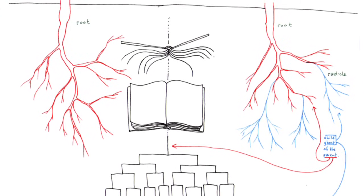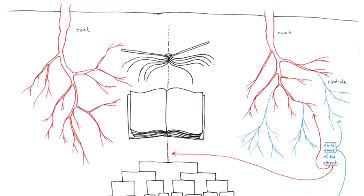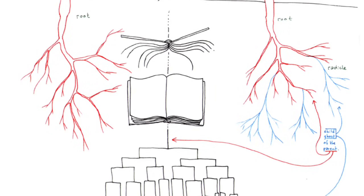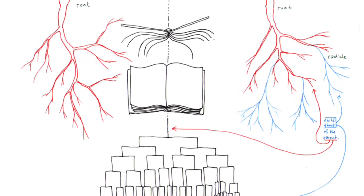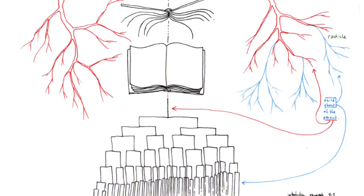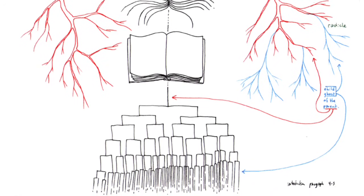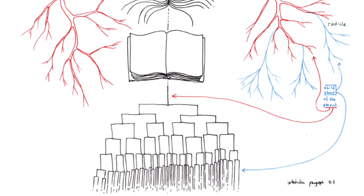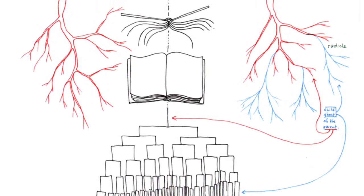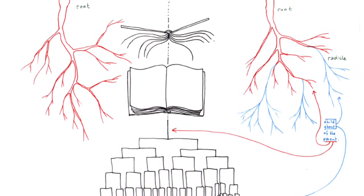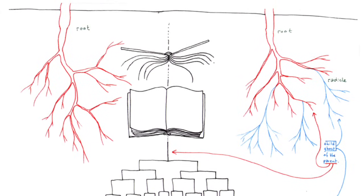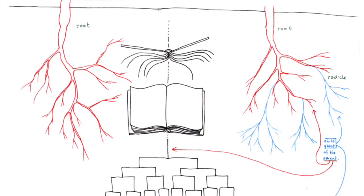Whenever a multiplicity is taken up in a structure, its growth is offset by a reduction in its laws of combination. The abortionists of unity are indeed angel-makers, doctores angelici, because they affirm a properly angelic and superior unity. Joyce's words, accurately described as having multiple roots, shatter the linear unity of the word, even of language, only to posit a cyclic unity of the sentence, text, or knowledge. Nietzsche's aphorisms shatter the linear unity of knowledge, only to invoke the cyclic unity of the eternal return, present as the non-known in thought. This is as much as to say that the vascular system does not really break with dualism. With the complementarity between a subject and an object, a natural reality and a spiritual reality, unity is consistently thwarted and obstructed in the object, while a new type of unity triumphs in the subject.